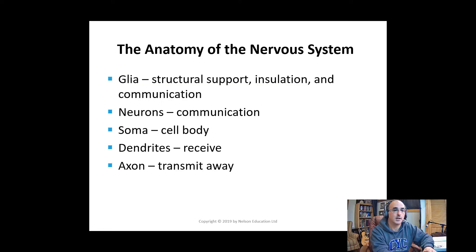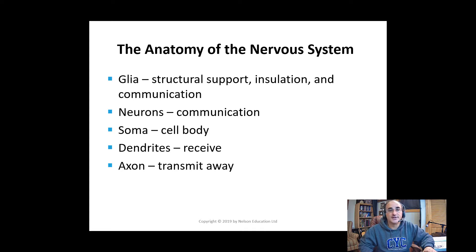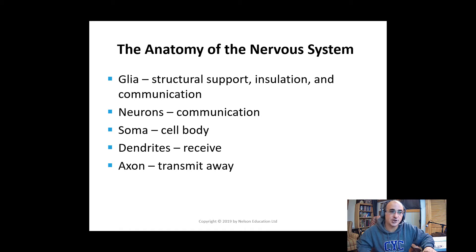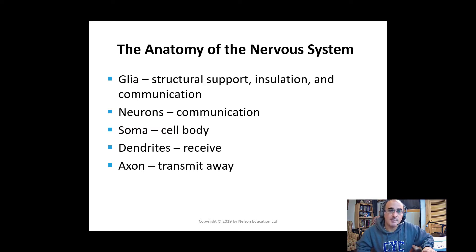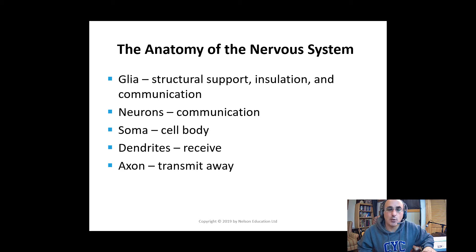In order to truly understand the biological basis of behavior, we need to explore the anatomy of the nervous system, which has five key components: the glia, which offers structural support; the neurons, which help with communication; the soma, which is the cell body; the dendrites, which receive signals; and the axon, which is responsible for transmission. Behavior depends on rapid information travel and processing.